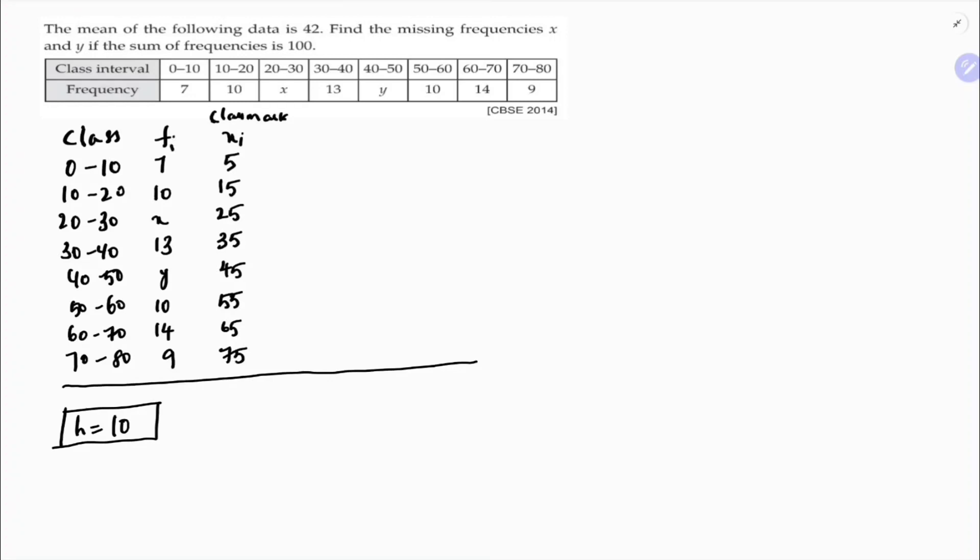Now I will solve this problem by using UI method here, step deviation, which is xi minus a by h. So I need to assume any one value in class mark as a. So here I will assume a value in such a way that it should be beside missing frequency, then it will be easy to simplify. For example, x or y beside this one, so either 25 or 45, I will assume as a. So now here I will assume 25 as a.